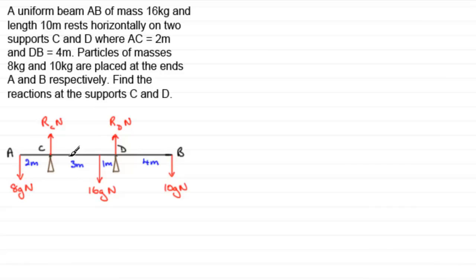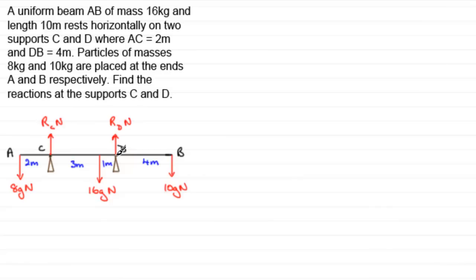The best place to take moments would be either C or D. The reason for that is that if you've got a force passing through the point where you're taking moments about — let's say we take moments about C — then this force RC has no effect in turning the rod about point C. There's no moment, so RC would not be in the equation. Only RD would be, and it would be the only unknown, making it a lot easier to solve.